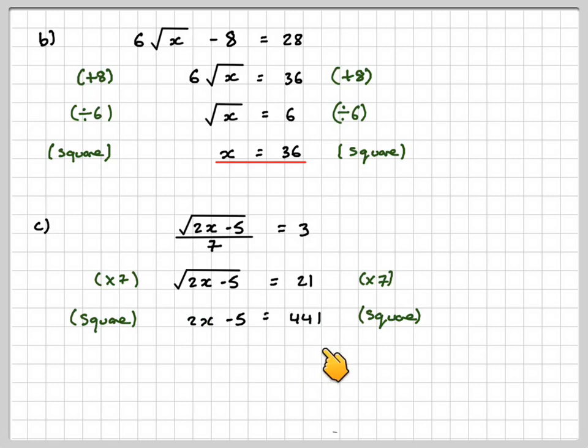The opposite of subtracting 5 is to add 5 to both sides. So we get 2x equals 446. And then the opposite of multiplying is to divide both sides by 2. So we get x equals 223.